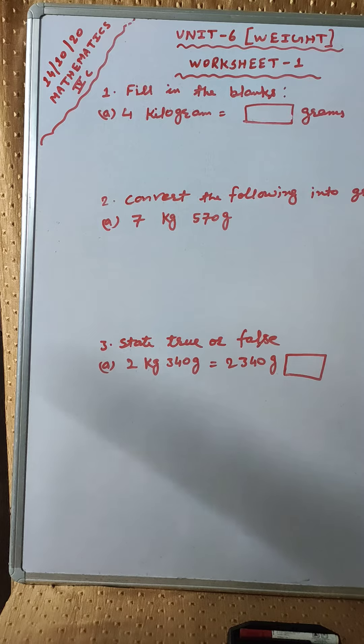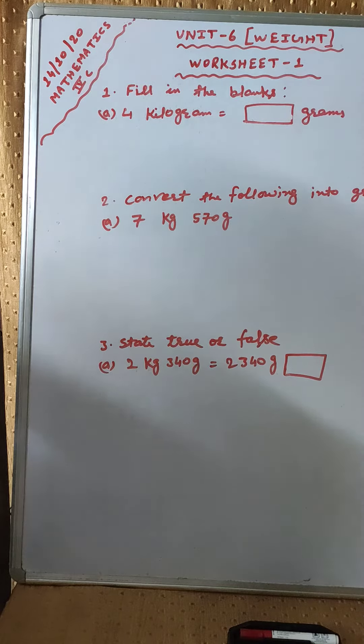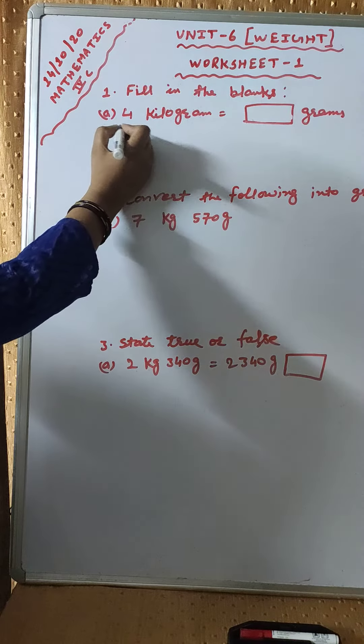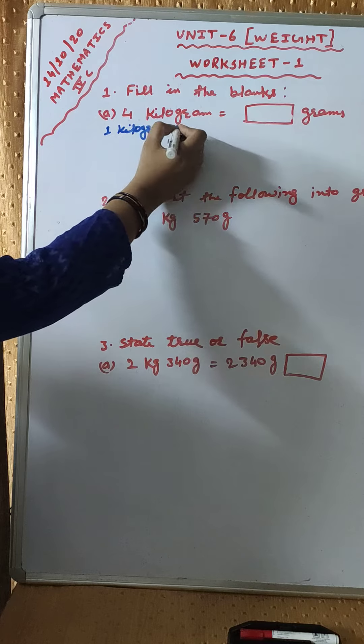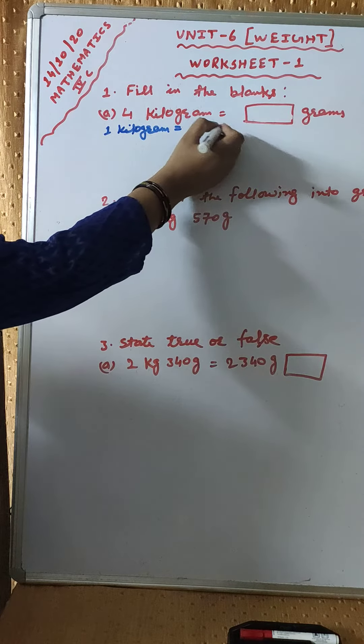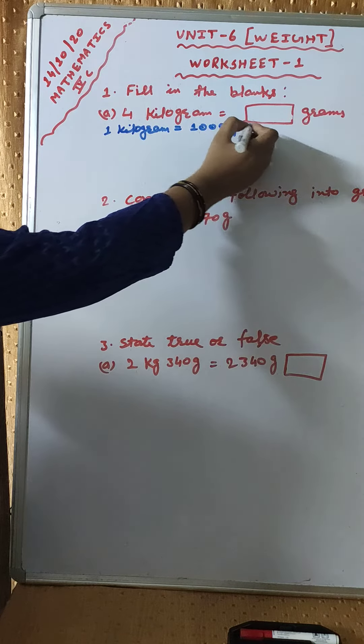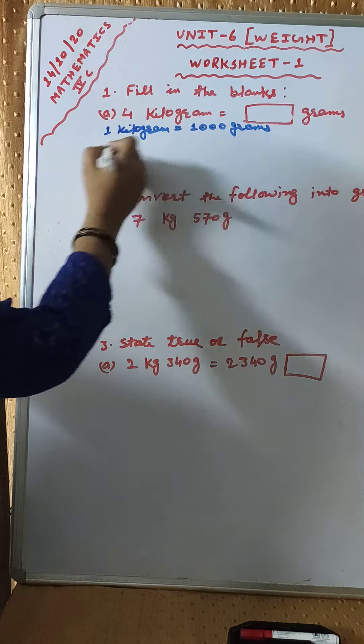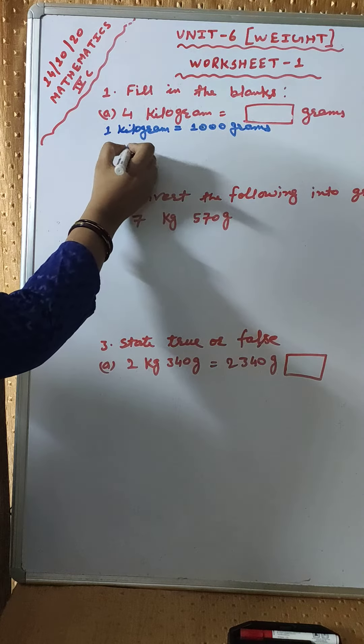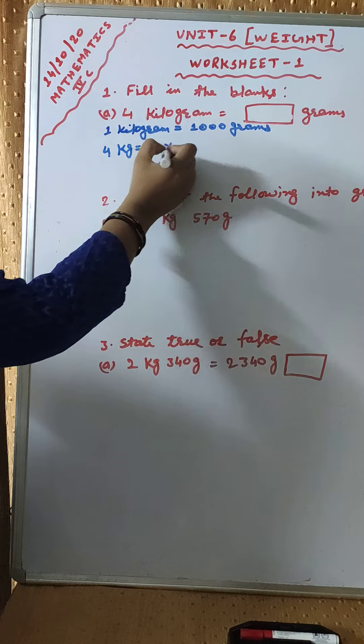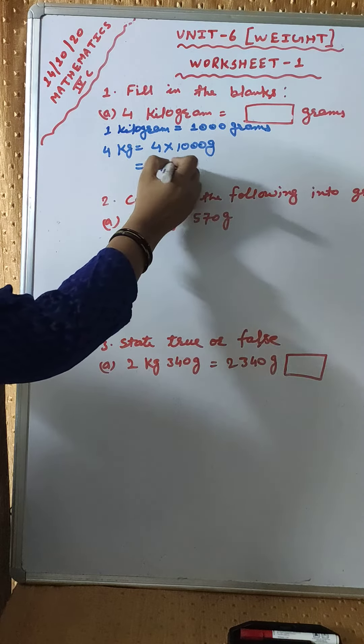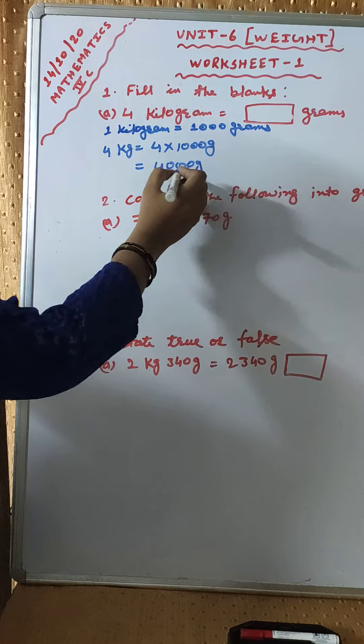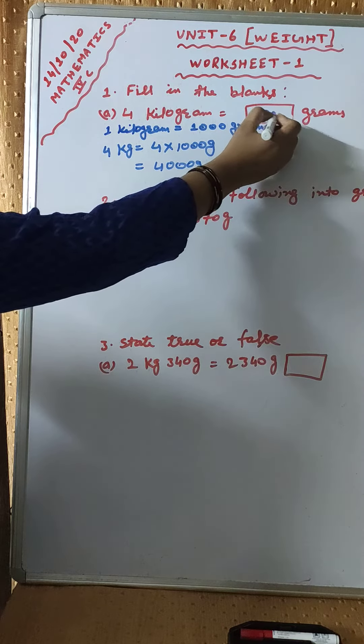4 kilogram equal to dash grams. For this, at first we will write 1 kilogram equal to 1000 grams. It means 4 kilogram equal to 4 into 1000 grams. That will be 4000 grams. So we can write here 4000.